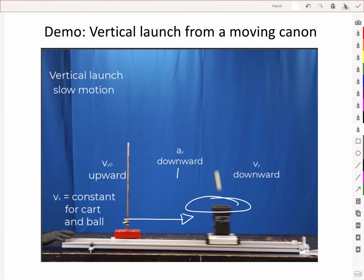Gravity provides a downward acceleration. This acts only to slow the vertical motion of the ball to zero and then increase the speed in the downward direction. Just like we saw for 1D motion and for the strobe image of a horizontal launch.